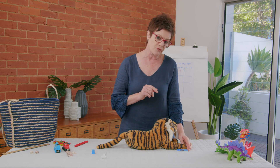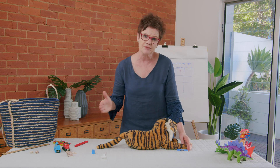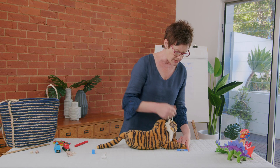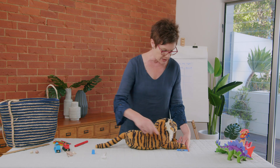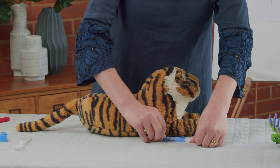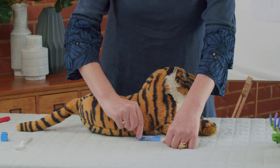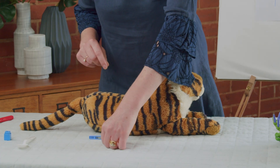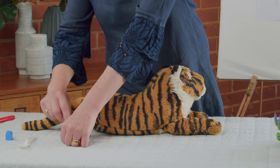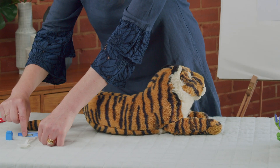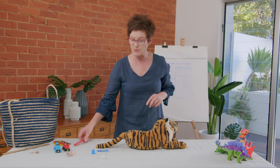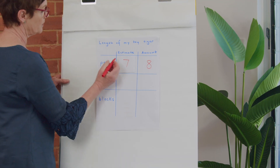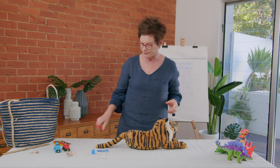When measuring with an informal unit we have to be very careful to measure accurately. I'll use my longest finger to mark the start point and end point, placing pegs top to toe with no gaps. One, two, three, four, five, six, seven, eight — eight pegs! That was a very good estimate. The length of my toy tiger is eight pegs.